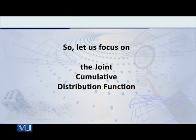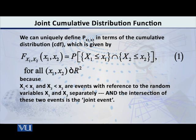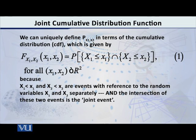What is the formal definition if we have two variables? The definition is as follows. The capital F of the random variables capital X1 and capital X2, defined at the values small x1 and small x2, is equal to the probability that X1 assumes a value less than or equal to small x1 and X2 assumes a value less than or equal to small x2, for all ordered pairs (x1, x2) defined on the two-dimensional Euclidean space R².